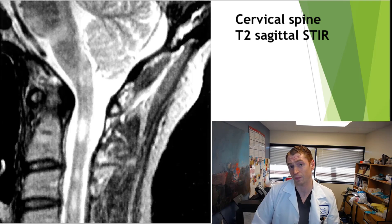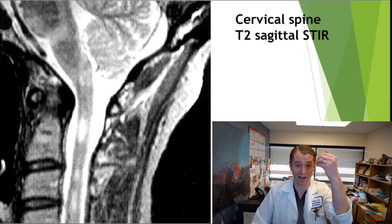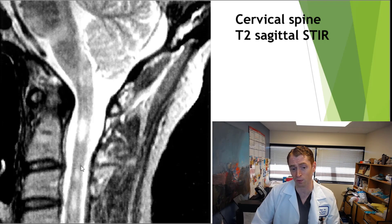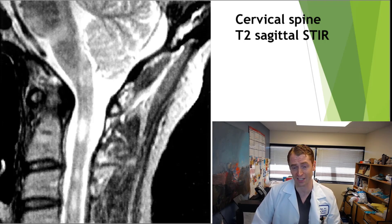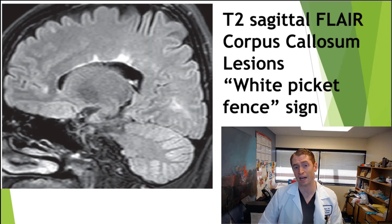In MS, if the MRI of the brain is equivocal, it may be helpful to get an MRI of the spine. Looking at an MRI of the cervical spine with sagittal images, you can see these typical multiple sclerosis lesions, though beware that not everyone with MS has lesions in the spine. Moving back to the brain, it's common for MS to involve the corpus callosum.